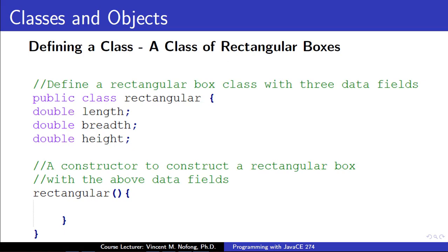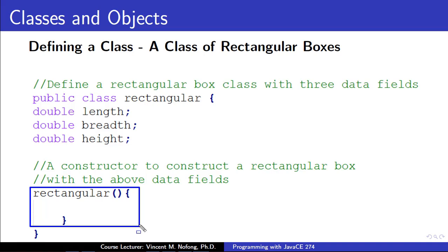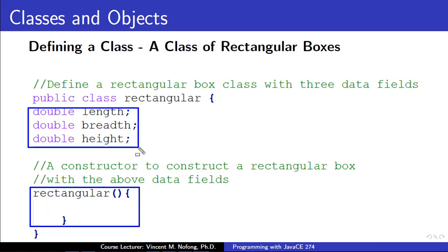A constructor is basically what we use to create new instances of the rectangular box class. Our first constructor, 'Rectangular' with nothing in the parentheses, will simply create a rectangular box with default values for length, breadth, and height as 0. With this, the user would be able to create rectangular boxes that all have default length, breadth, and height of 0.